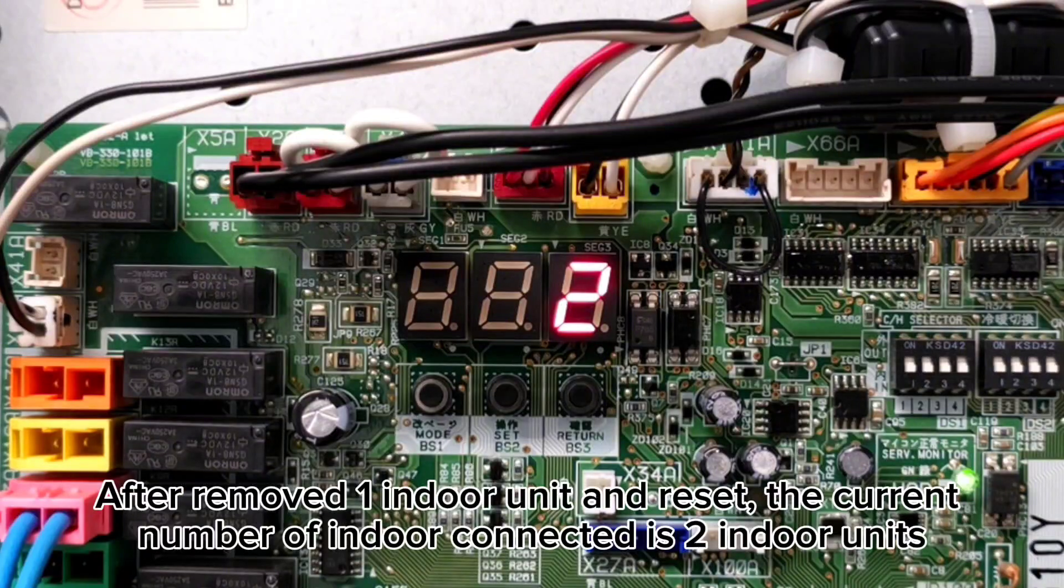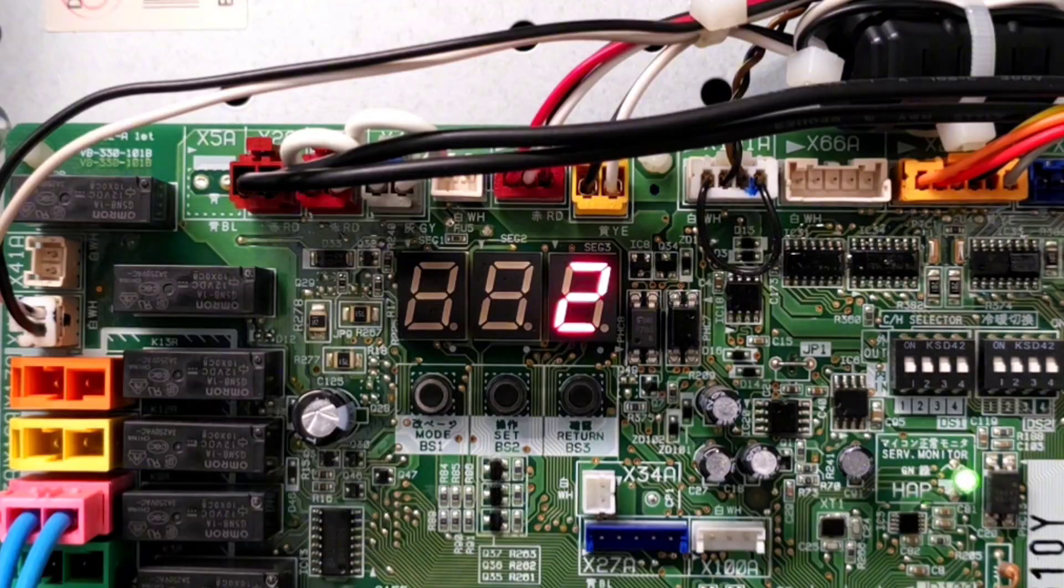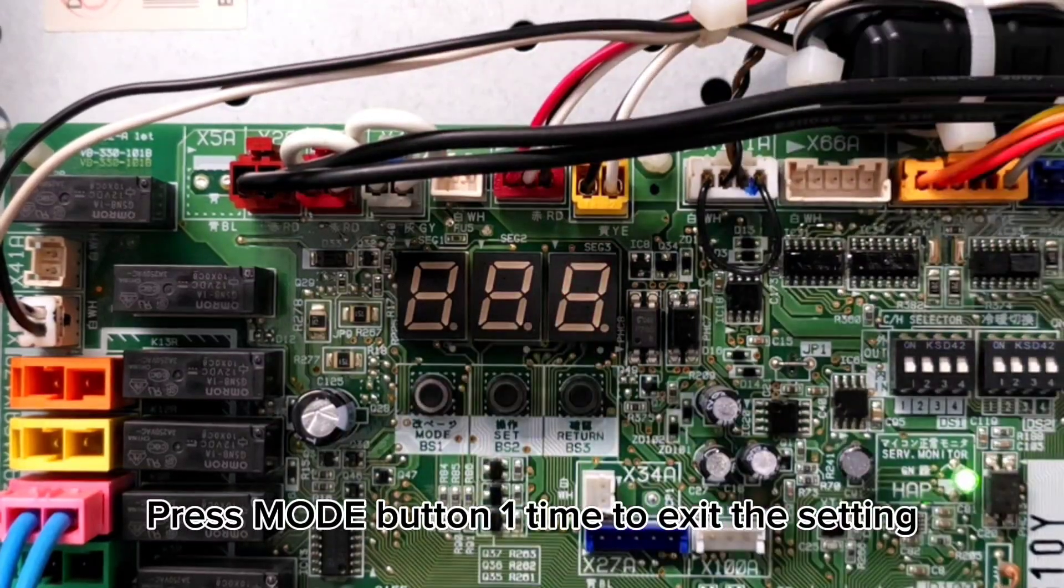After removing one indoor unit and resetting, the current number of indoor units connected is 2. Press Mode button one time to exit the setting.